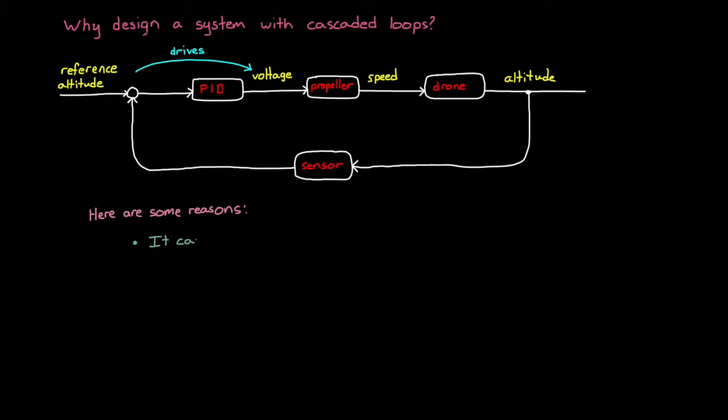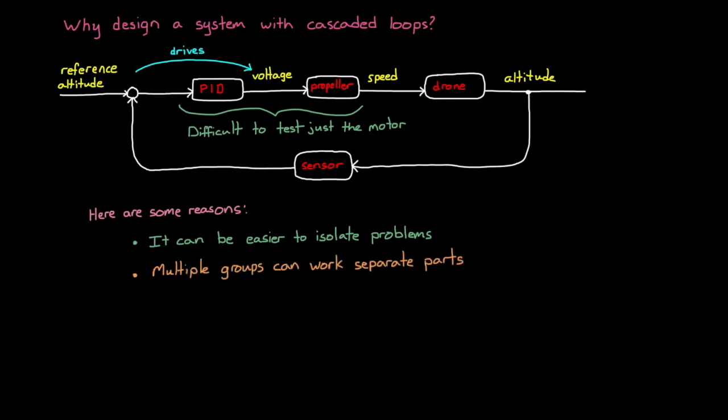The first is that with a cascaded approach, it can be easier to isolate problems in the system. In our single-loop example, if we have a problem with the motor, then it can be difficult to test just the motor separate from the rest of the altitude system. With the cascaded loop scenario, we could run the motor controller closed loop and determine if the problem exists with the motor or with the rest of the system interacting with the motor. The second reason for cascaded loops is that multiple groups can work separate parts of the problem. One team might build and design the motor controller, while another team is responsible for the altitude controller. This is especially the case if you buy a motor with an integrated motor controller. The supplier that built the motor will have already designed the inner loop for you, and you just need to incorporate the outer loop around it.